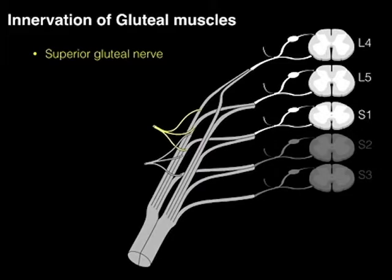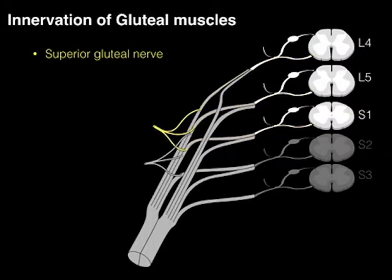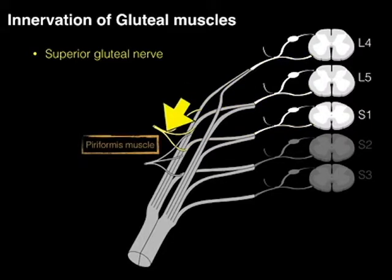We're going to focus on the superior and inferior gluteal nerves. The superior gluteal nerve arises from L4, L5, and S1. The motor neuron cell bodies arise in the ventral horn, exit via the ventral rami, and course into the superior gluteal nerve, innervating three muscles: the gluteus medius, gluteus minimus, and TFL. This nerve gets its name because it courses above the piriformis.